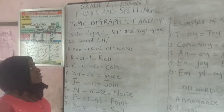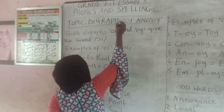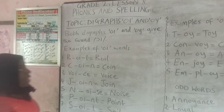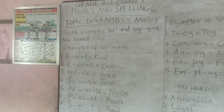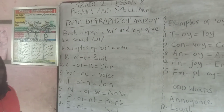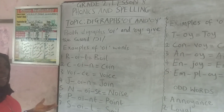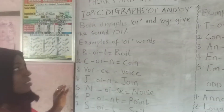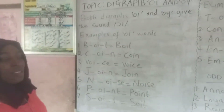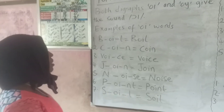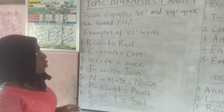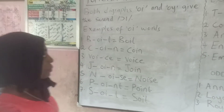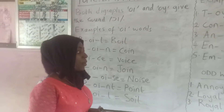Our topic is digraphs O-I and O-Y. Digraphs are the combination of two or more letters, especially vowel letters, to give us the same sound in several words. Our digraphs O-I and O-Y give us the same sound.